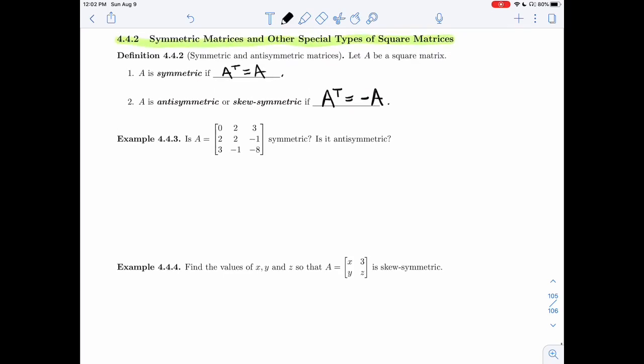All right, let's try this definition out on the matrix A that we have here. Let's take A to be this matrix here. Is it symmetric? Is it antisymmetric? Both definitions start with the transpose, so let's find the transpose of this matrix.